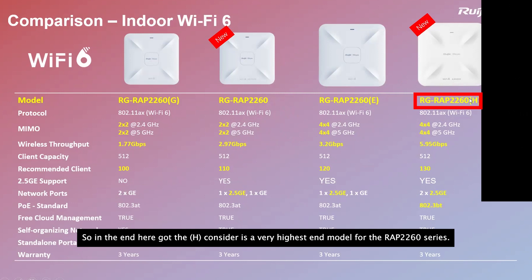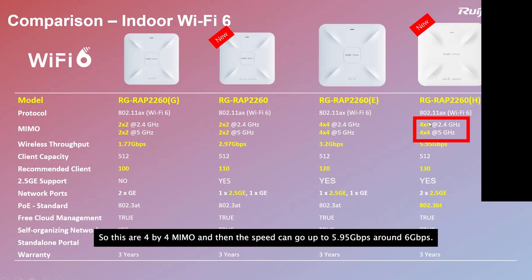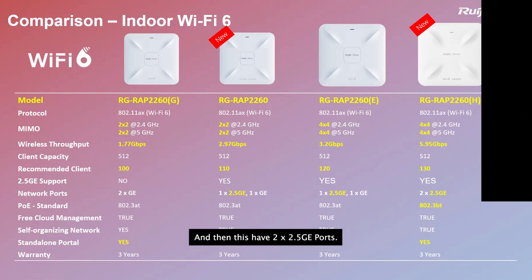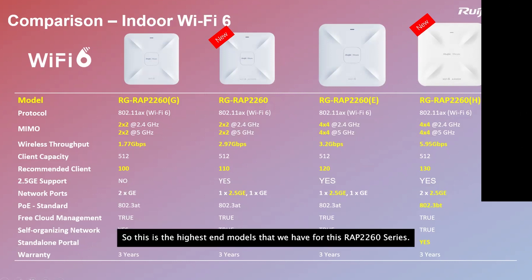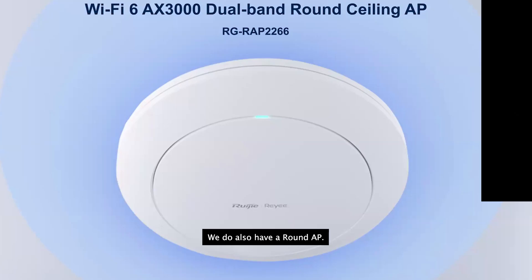The 2260H is the highest-end model in the 2260 series. It features a 4x4 MU-MIMO configuration and speeds up to approximately 5.95–6 Gbps. It also comes with two 2.5G ports, making it the top-tier model in the 2260 series.